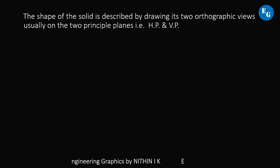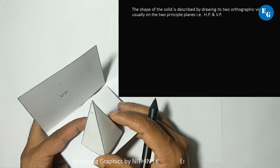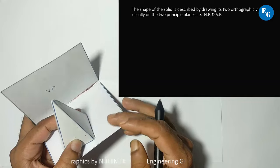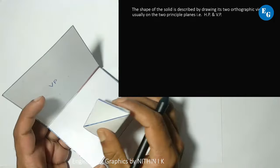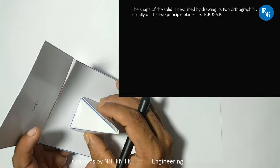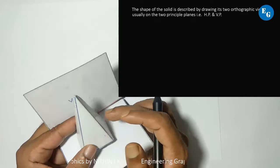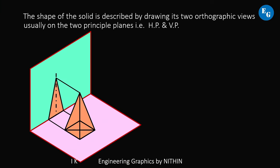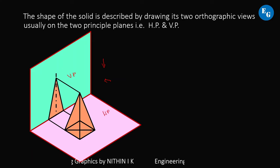The shape of the solid is described by drawing its two orthographic views, usually on the two principal planes — HP and VP. For example, for a square pyramid: the top view is square, and the front view is a triangle. These minimum two views describe the solid. In first angle projection, the front view and top view are drawn with a reference line.